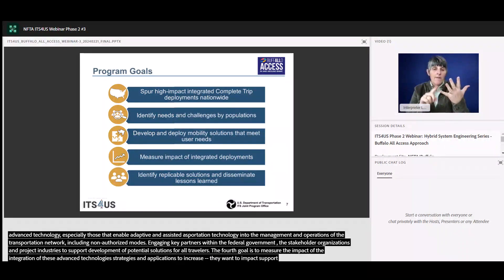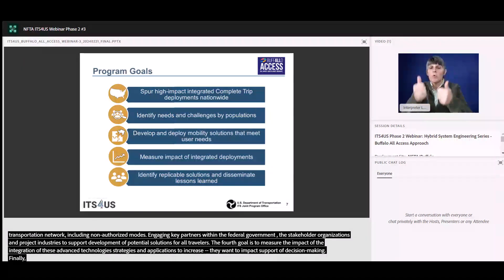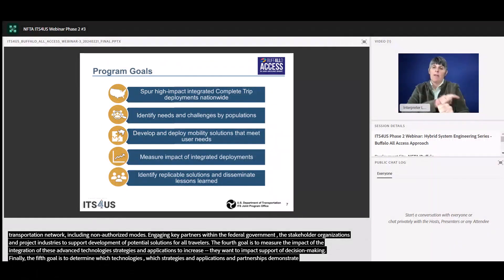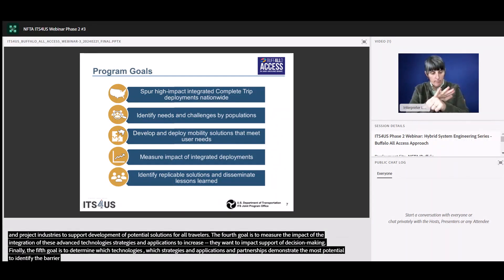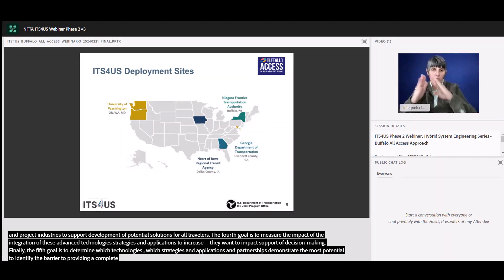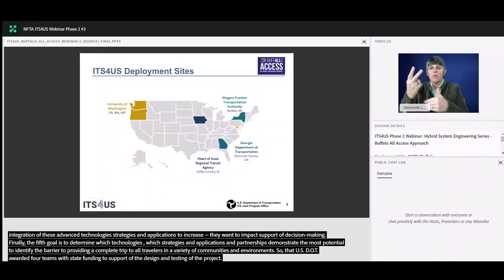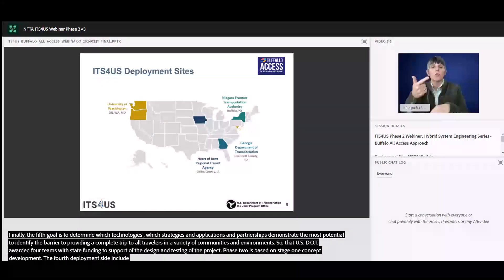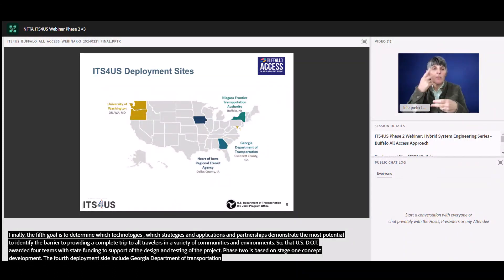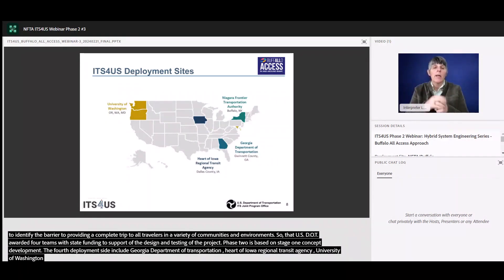Finally, the fifth goal is to determine which technologies, strategies and applications, as well as institutional partnerships, demonstrate the most potential to address identified barriers to providing a complete trip to all travelers in a variety of communities and built environments. The USDOT awarded four teams with phase two funding to support the design and testing of their projects. Phase two is based on phase one concept development. The four deployment sites include Georgia Department of Transportation, GDOT, Heart of Iowa Regional Transit Agency, HRTA, University of Washington, UW, and Niagara Frontier Transportation Authority and NFTA Buffalo.